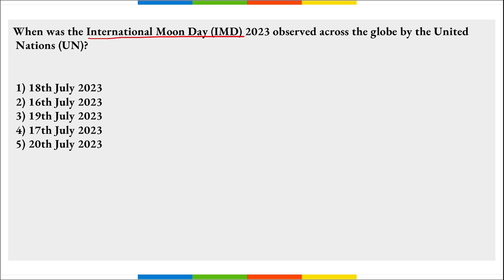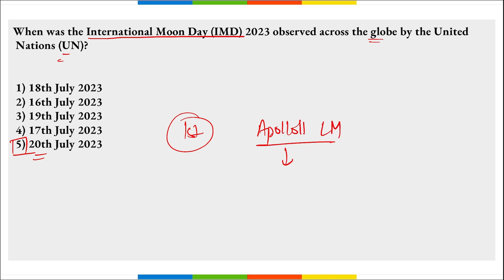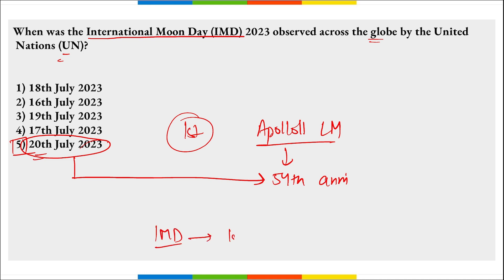When do we observe International Moon Day? It is also observed on 20th of July. The day marks the anniversary of the first human landing on the moon as part of the Apollo 11 lunar mission. In 2023, it was the 54th anniversary of the Apollo 11 mission. International Moon Day was observed for the first time on 20th July 2022, making 2023 its second edition.